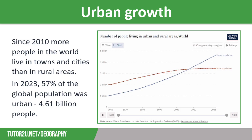The world's population has grown dramatically since the 19th century and is still growing. During the 20th century the global population grew from 1.6 billion people in 1900 to 6.17 billion people by the year 2000, and we hit 8 billion people across the globe in November 2022. As the global population has increased, the proportion of people living in urban areas has also increased. Since 2010, more people in the world live in towns and cities than rural areas. In 2023, 57 percent of the global population was urban, equating to around 4.61 billion people compared to 3.45 billion rural dwellers.